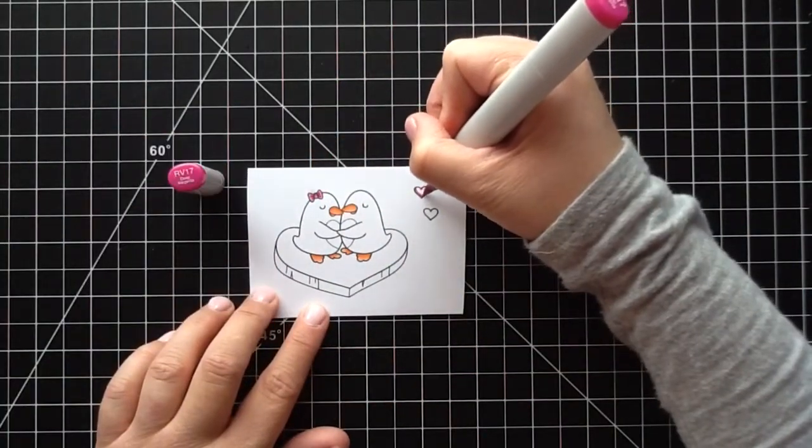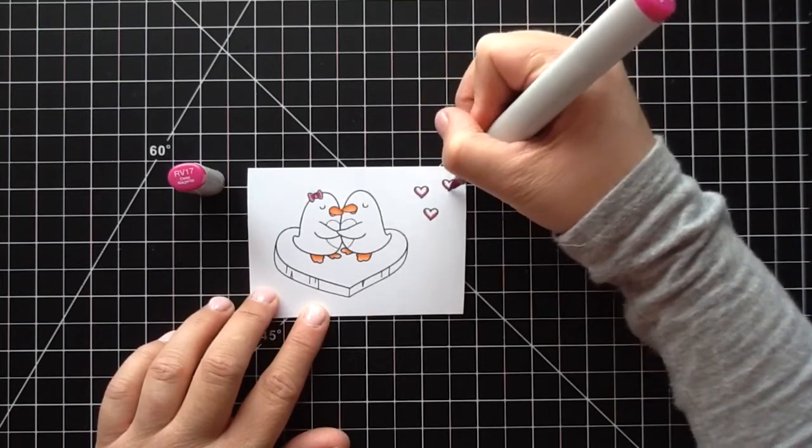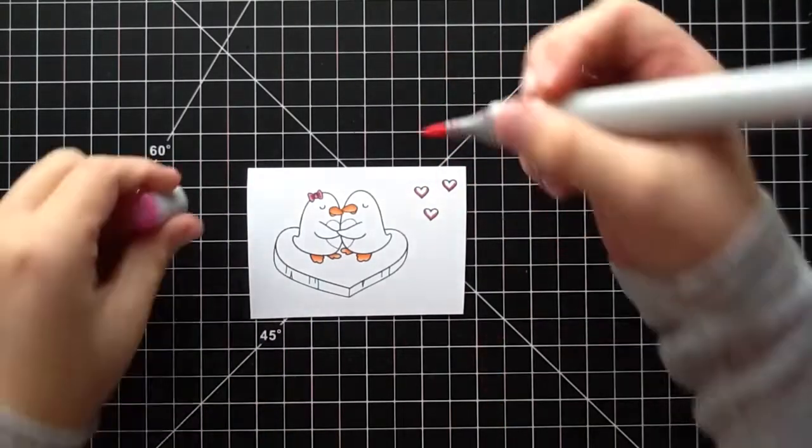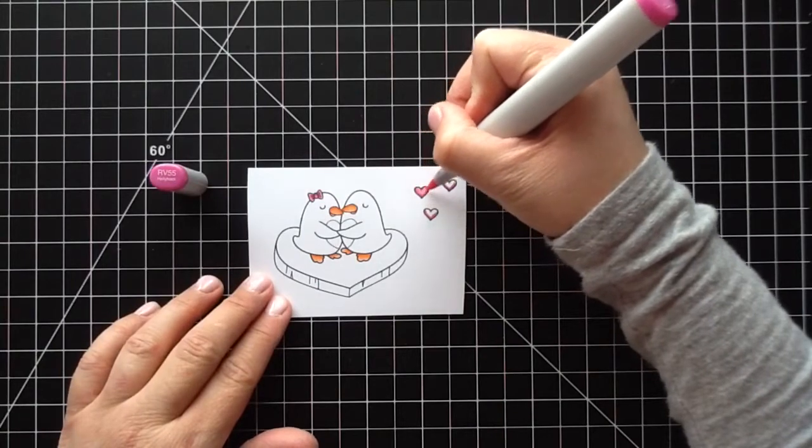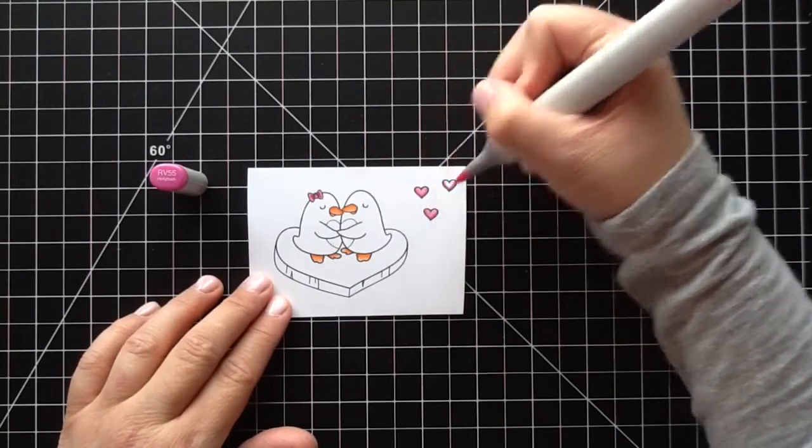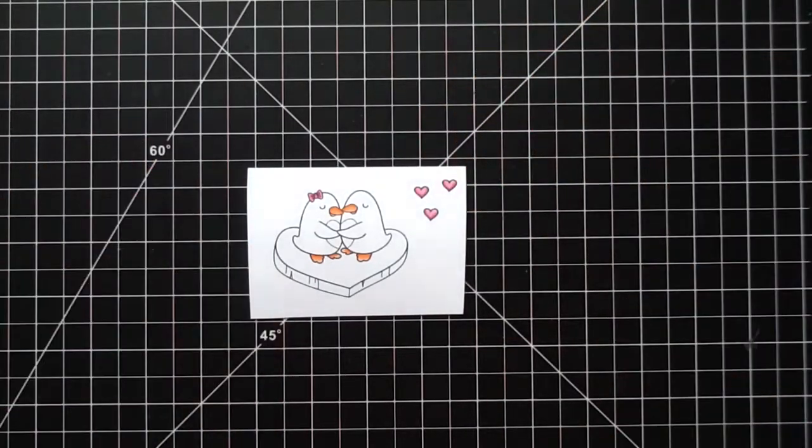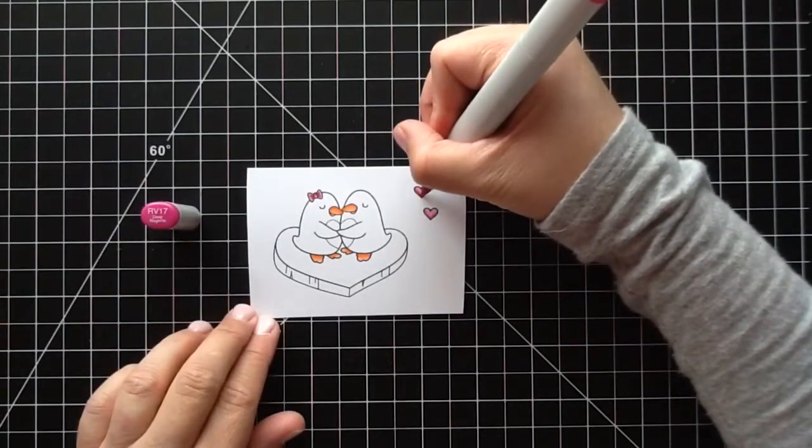Now I'm just doing the hearts. I'm adding the darkest portion at the bottom. I love that the little iceberg they're standing on is a heart as well. This is such a cute thought out little set. Then I go back in once more with the darkest color.